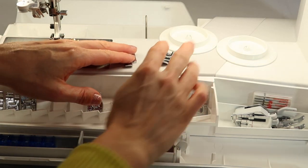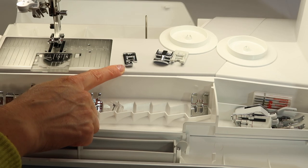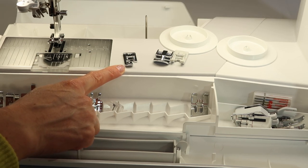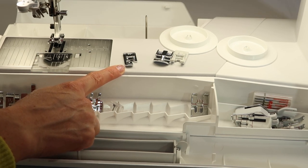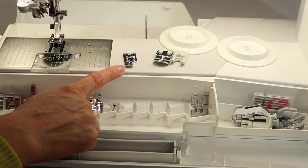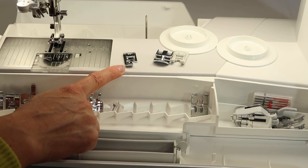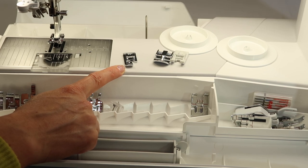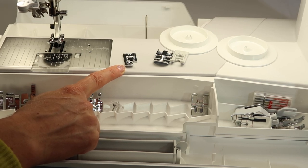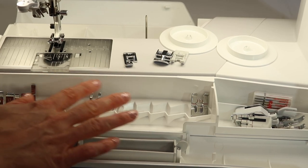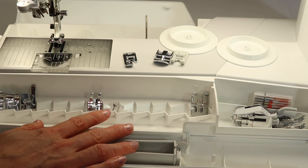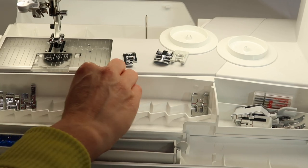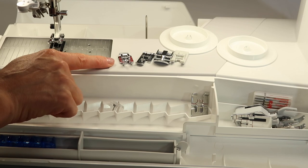If you don't have an overlock machine, the foot J is the perfect foot for that. You'll find videos on all these feet as we feature them in our free tutorials that we have filmed on the Husqvarna Viking Designer Epic One. Links to all the videos, over 50 of them, are going to be found in the description below.